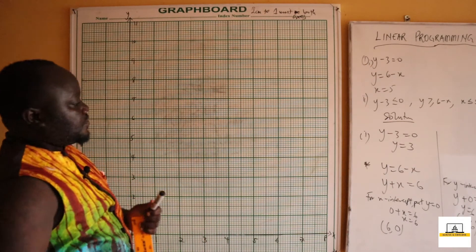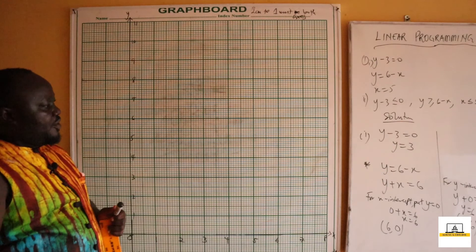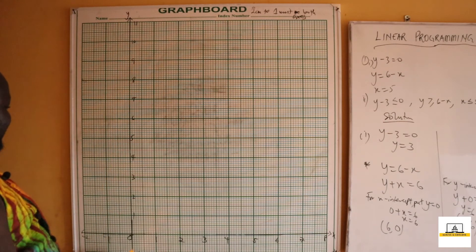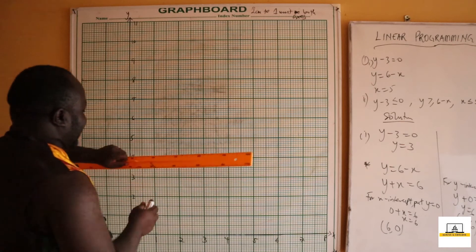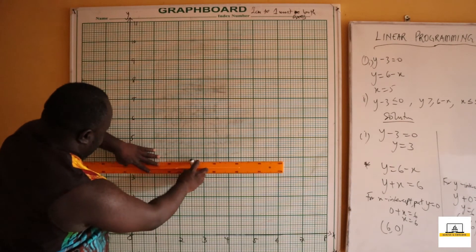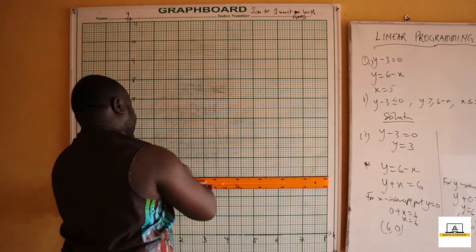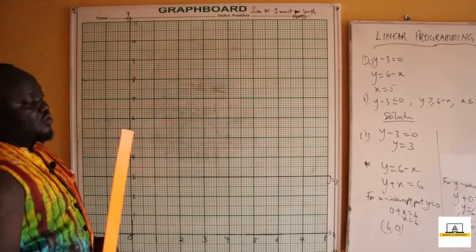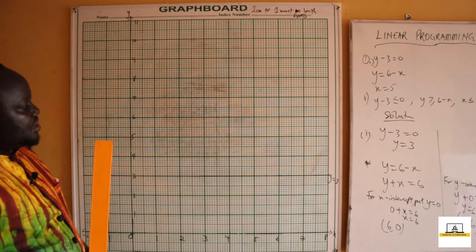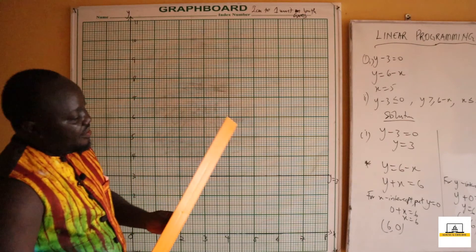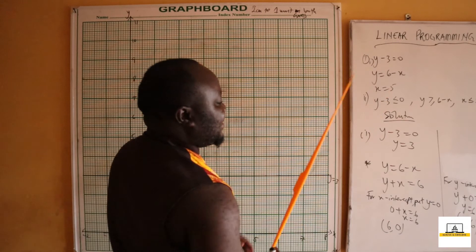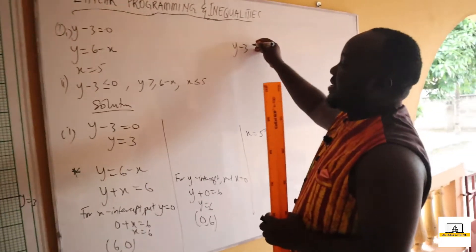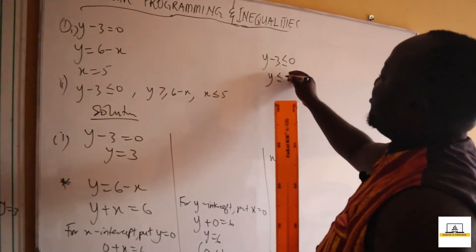Now we plot the line y equals 3. On the y-axis, we locate positive 3 and draw a horizontal line y equals 3. The inequality given was y minus 3 less than or equal to 0, which means y is less than or equal to 3.